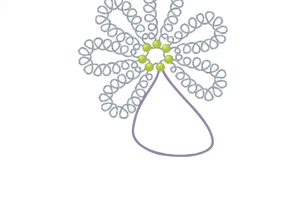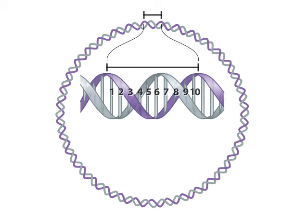To understand supercoiling, consider a completely relaxed circular piece of DNA. An unstressed DNA molecule naturally forms a helix with about 10 base pairs per turn. Now consider cutting a strand, unwinding a turn, and then resealing the DNA.